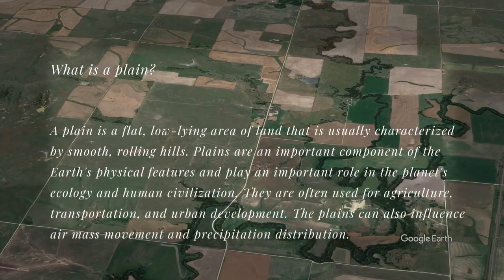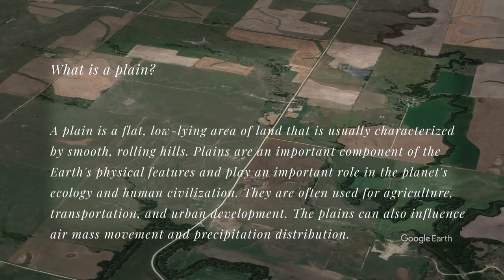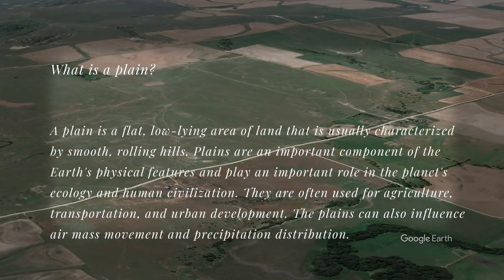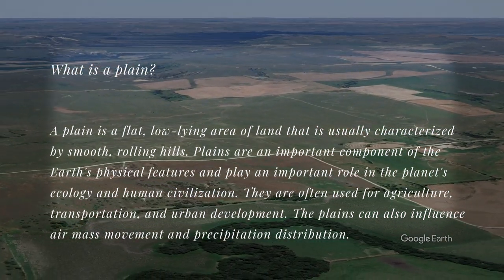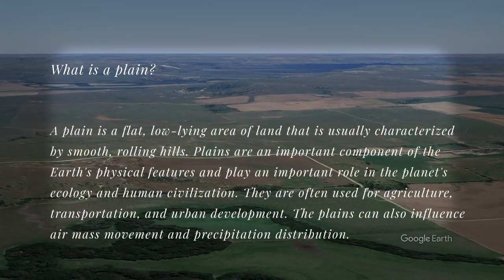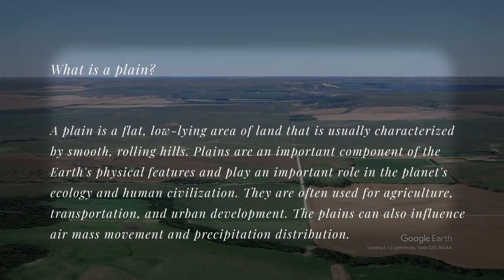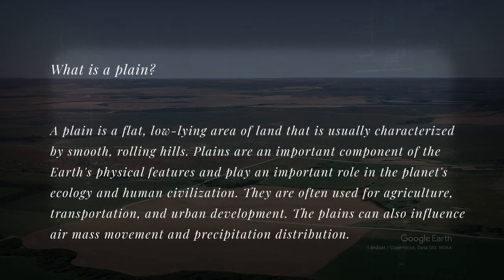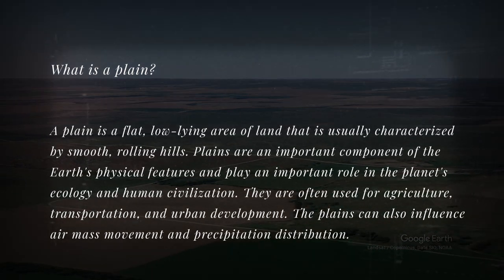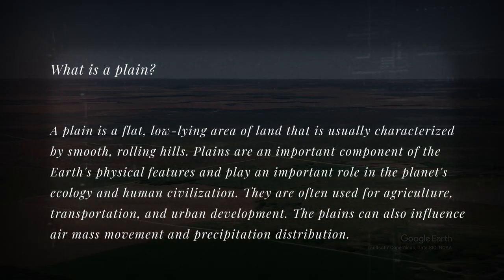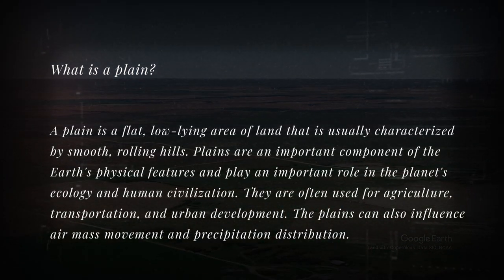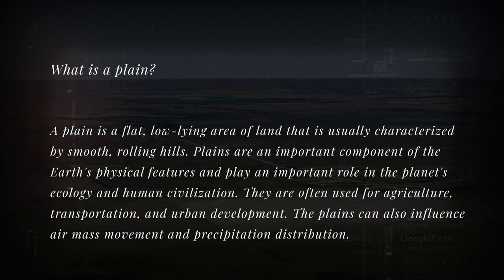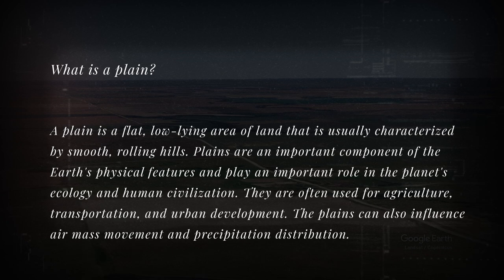What is a plain? A plain is a flat, low-lying area of land that is usually characterized by smooth, rolling hills. Plains are an important component of Earth's physical features and play an important role in the planet's ecology and human civilization. They are often used for agriculture, transportation, and urban development. Plains can also influence air mass movement and precipitation distribution.